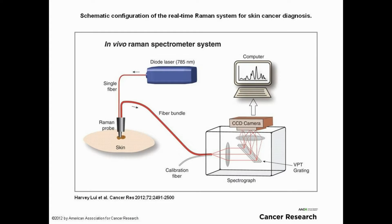There have been studies that demonstrated the successful use of Raman spectroscopy to classify different lesions for skin cancer, lung cancer, colorectal cancer, oral cancer and many more. For example, our group have shown in a large-scale clinical study that cancerous skin lesions are able to be differentiated against other types of pigmented lesions.